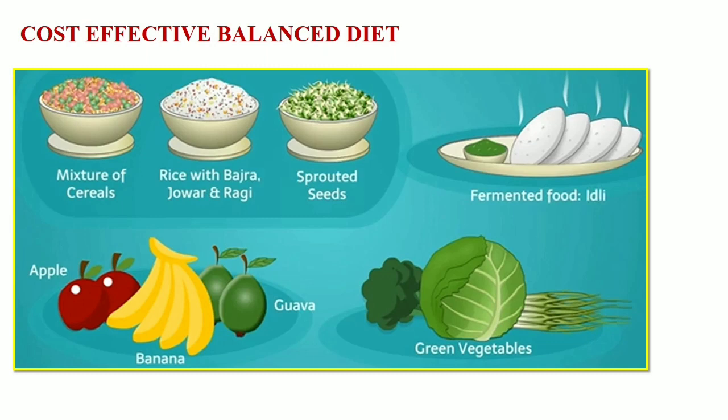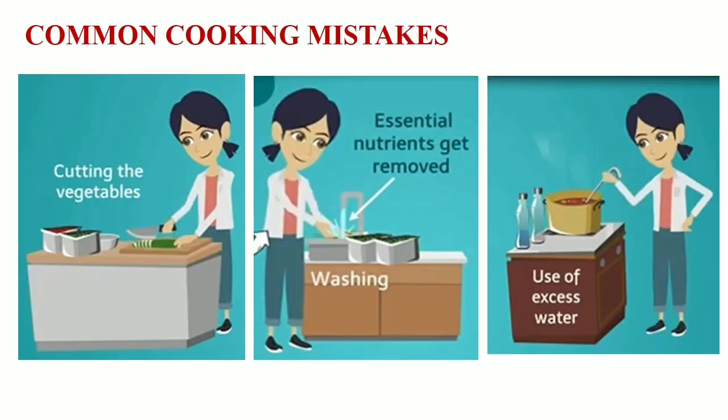For example, a mixture of cereals — mixture of jowar and ragi or rice with bajra — some sprouted seeds, plenty of green vegetables, different fruits like apple, banana, guava, fermented food like idli. All these are cost-effective balanced diet, which is good for health.